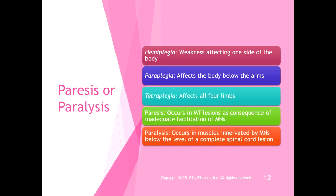With motor tract or upper motor neuron lesions, you can get hemiplegia, which is weakness affecting one side of the body; paraplegia, which affects the body below the arms; and tetraplegia, which affects all four limbs — it used to be called quadriplegia. Paresis occurs as a consequence of inadequate facilitation of motor neurons, and paralysis occurs in muscles innervated by motor neurons below the level of a complete spinal cord lesion, because the motor neurons are not getting the facilitation they need from the motor tracks.